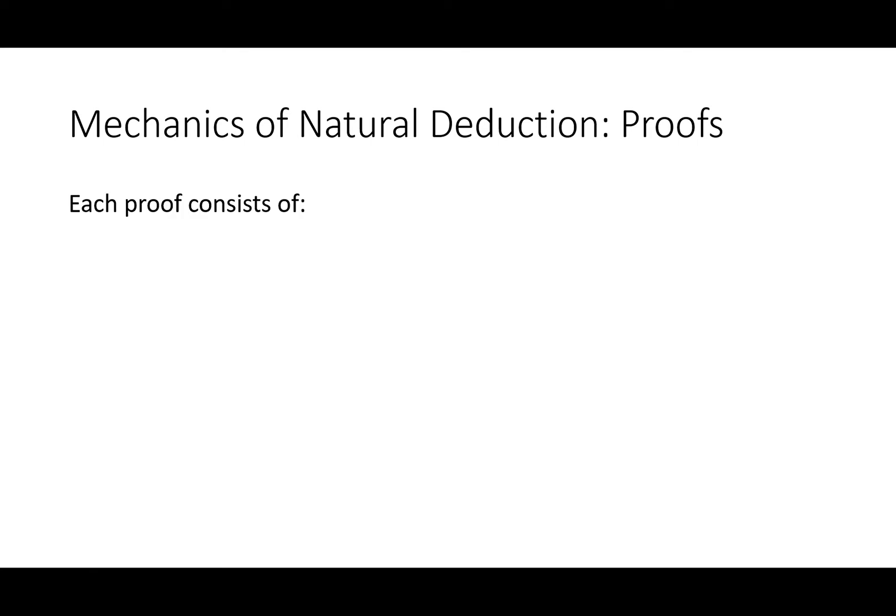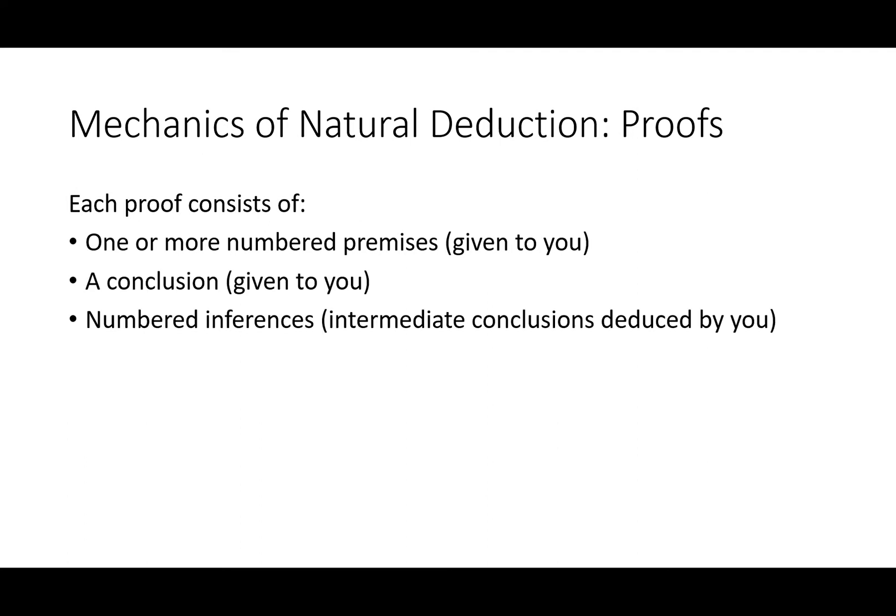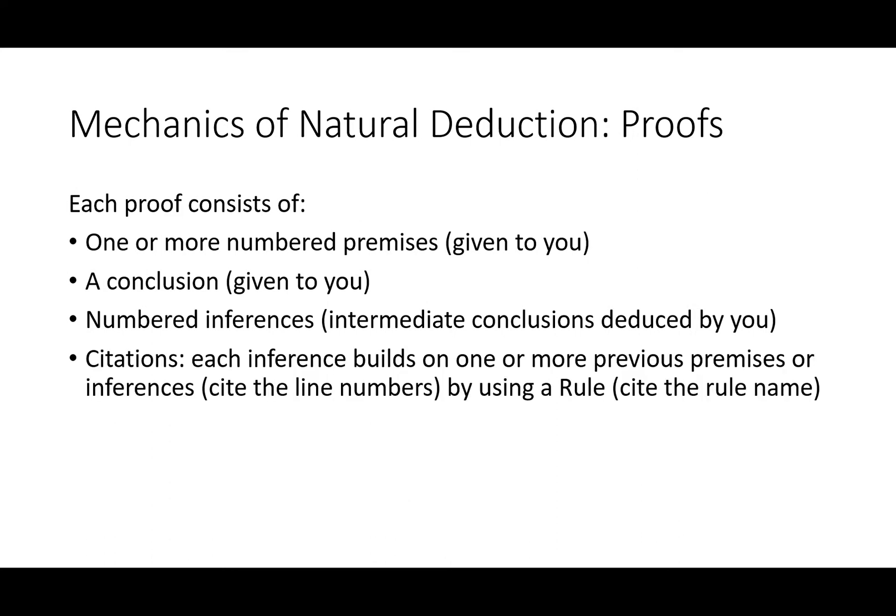Each proof consists of one or more numbered premises given to you, a conclusion given to you, and numbered inferences the intermediate conclusions deduced by you. Proofs also contain citations. These are important. Each inference builds on one or more previous premises or inferences. So we cite the line numbers by using a rule. We cite the rule name. This is going to make more sense with a couple examples. So that's exactly what we're going to see next.